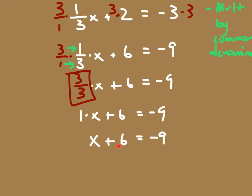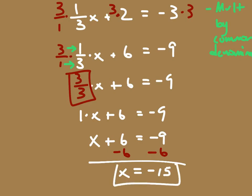One times x is just x itself, so I'm left with x plus six is equal to negative nine. My next step is to solve this for x — this is a familiar problem. I simply subtract both sides by six, and we get that x is equal to negative 15.